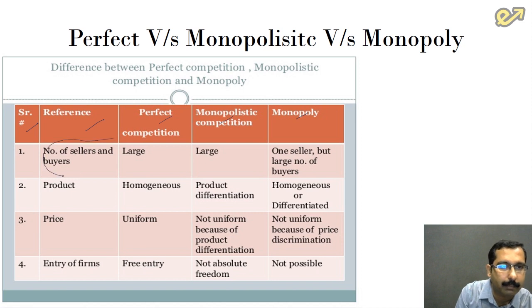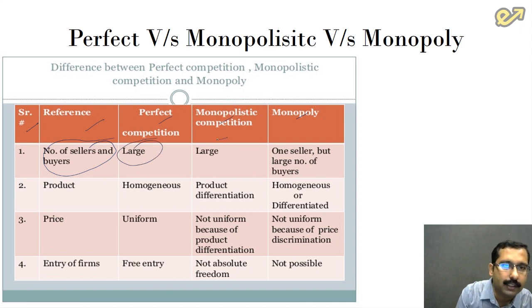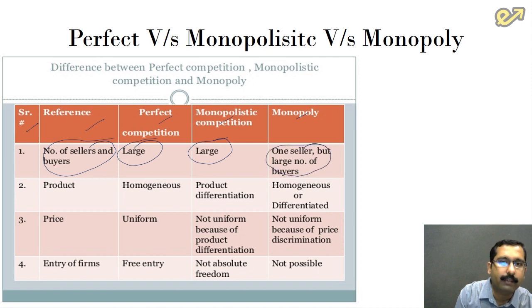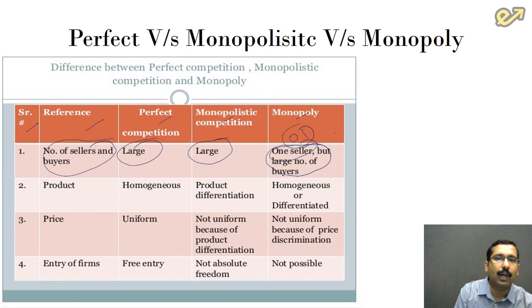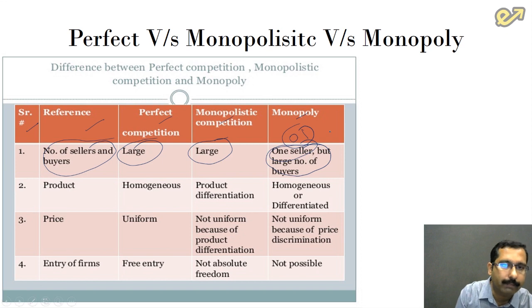Number of sellers and buyers is the most important point to remember. In perfect competition, there are a large number of buyers and a large number of sellers. The same holds for monopolistic competition. But in a monopoly market, there will be only one seller — very important. This can be an MCQ question: how many sellers are there in a monopoly market? It is always one.